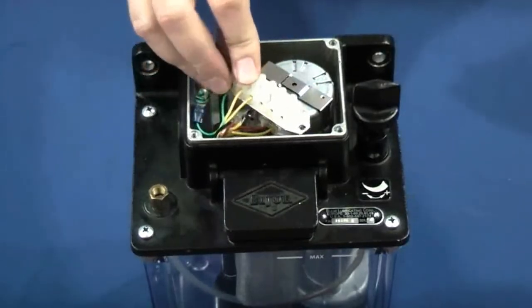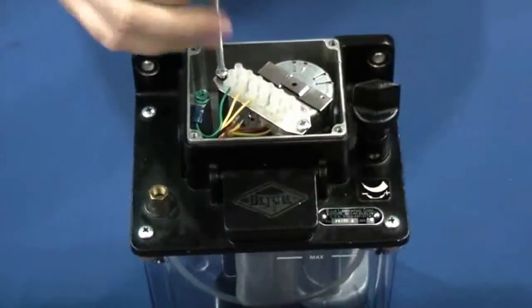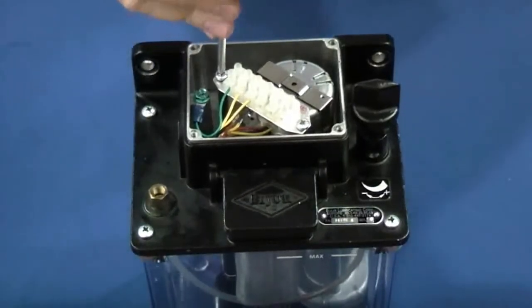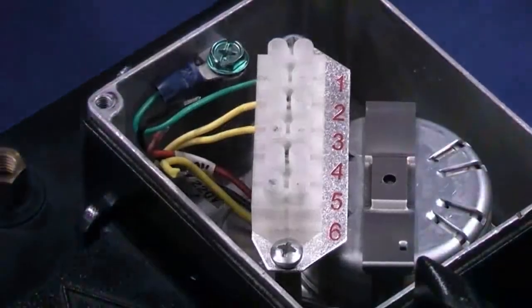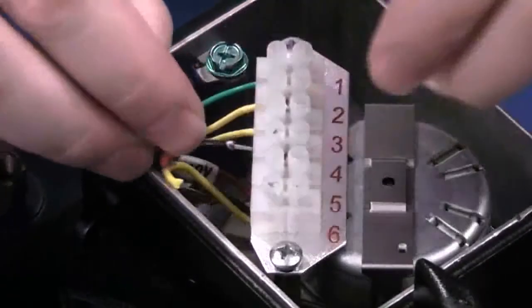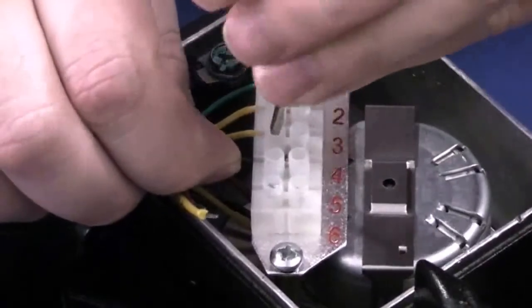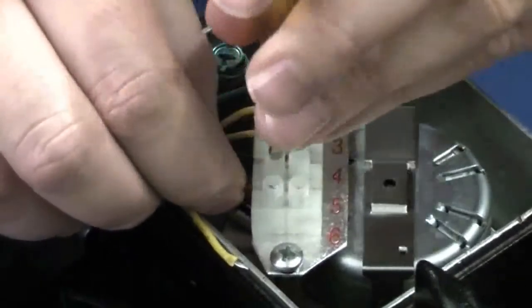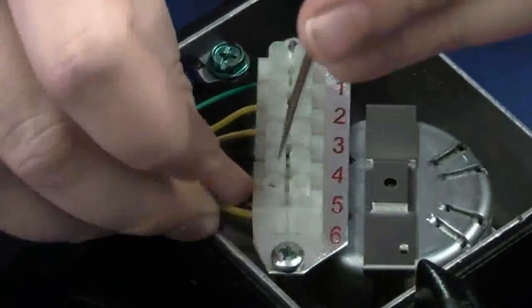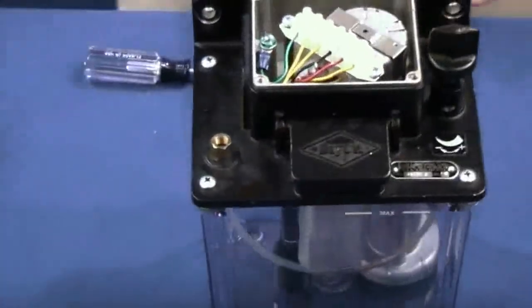Next, we will connect the terminal strip back to the standoffs on the unit by inserting the screws. Next, we will replace each wire back into the terminal strip. We will start with the black wire into number four, followed by the red wire into number five, and the yellow into number six. And last, we will just replace the motor cover and the four screws.